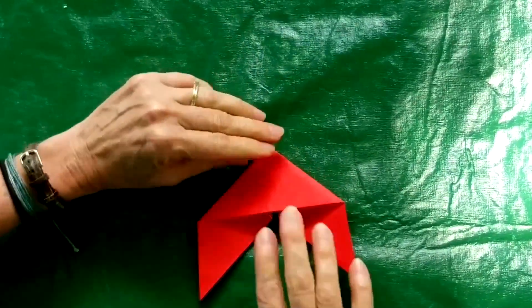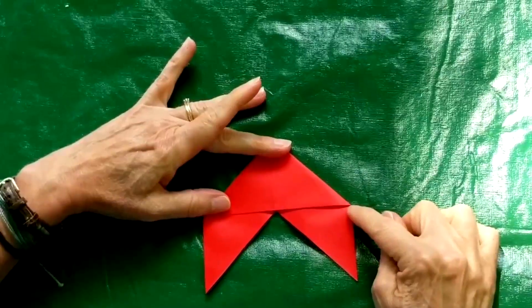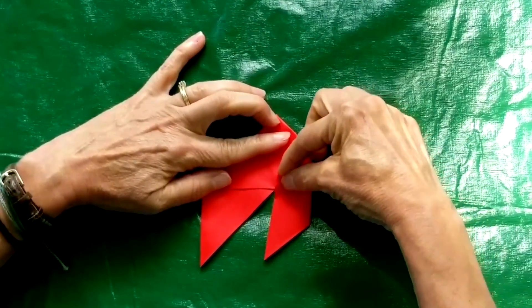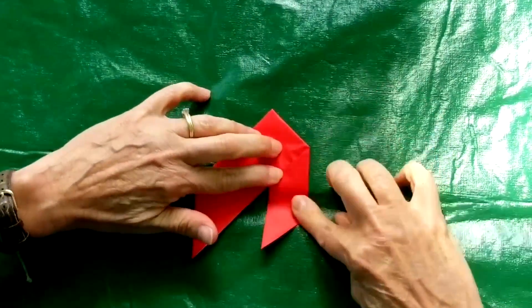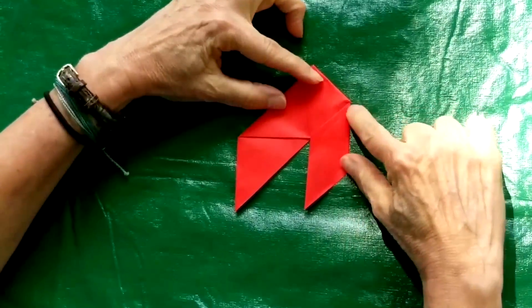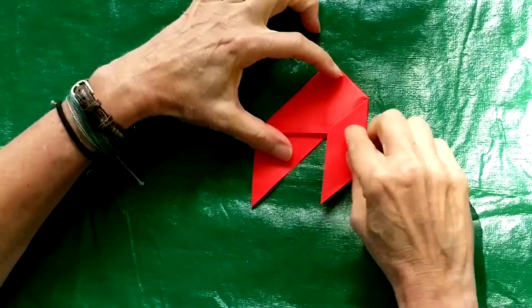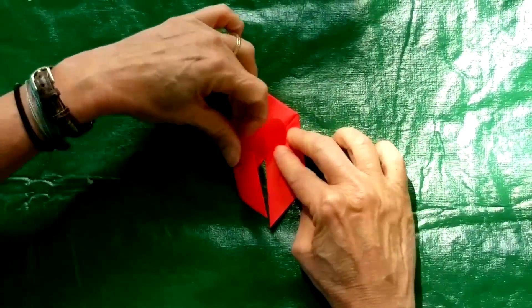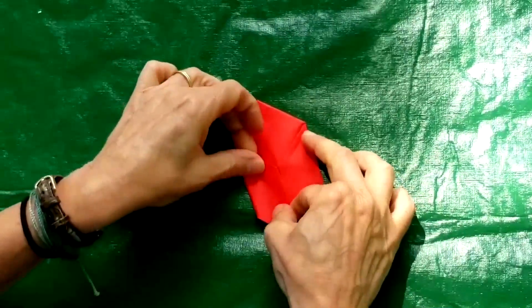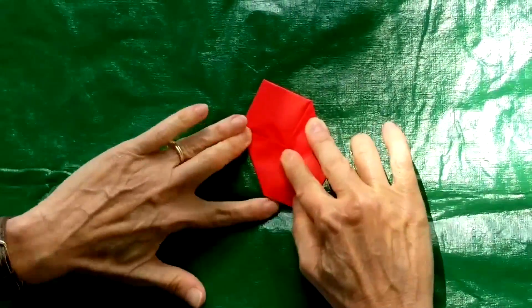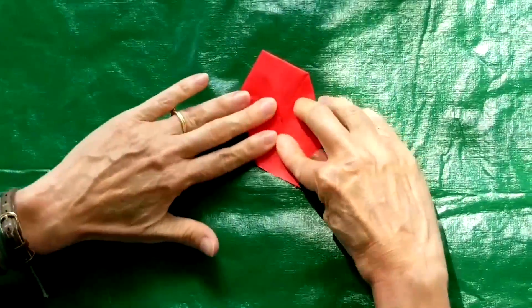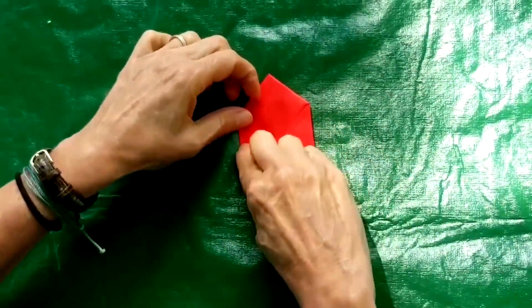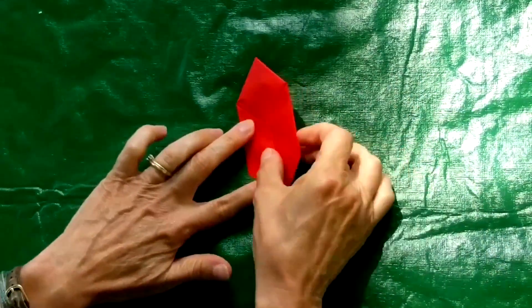Alright, there we go. Turn it over. And now we're going to take this corner and bring it over towards the center. Just like that. This edge should line up with this edge, so it's one long continuous line. Bring this corner over to the center on this side as well.